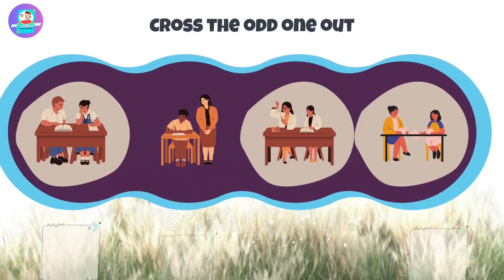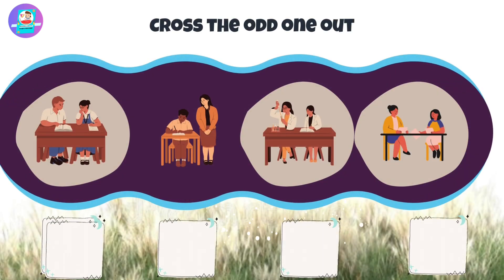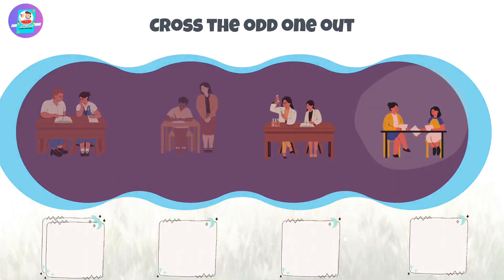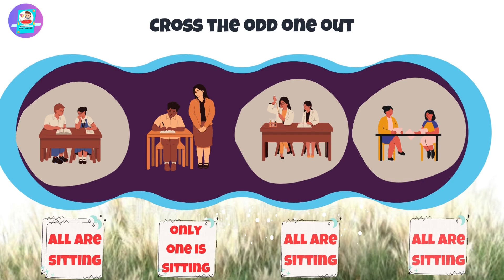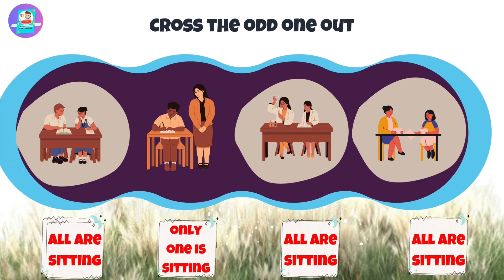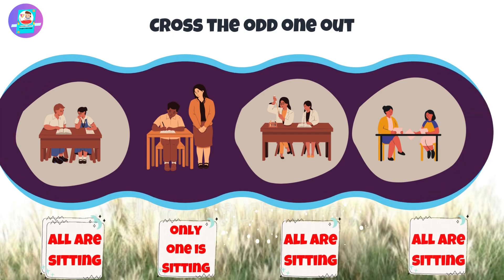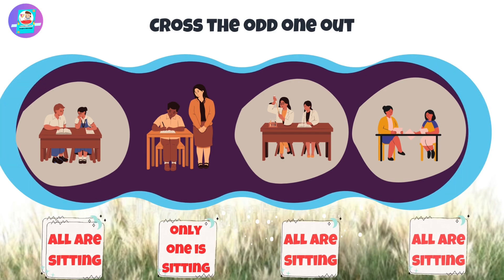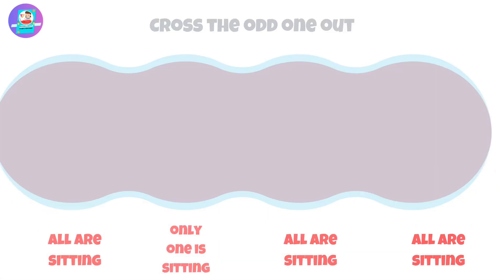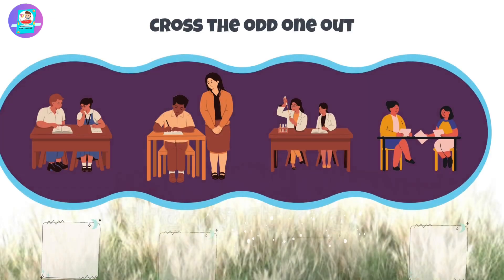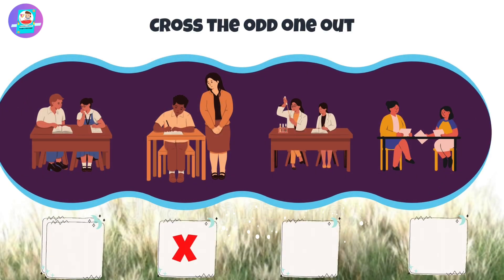Okay, let's check first. When we see here we have 3 tables with 2 sitting persons and 1 with only 1 sitting person, which is odd. So put a cross on this table with 1 sitting person.